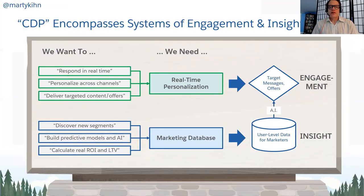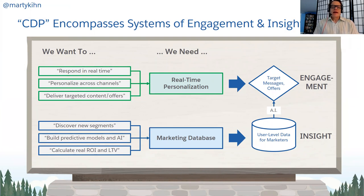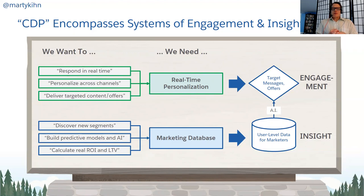Looking at RFPs from a couple years ago, when asking what marketers actually want when they ask for a CDP, the needs break down into two groups. One is around real-time personalization: somebody arrives at my site and I want to start personalizing the experience right away — the kind of thing that Everage does, for instance. I'd call that a system of engagement. The other, which is probably the primary use case for CDP, is the marketing database: the ability to discover new segments, a single view of the customer, a master marketing record.